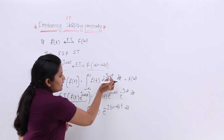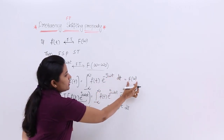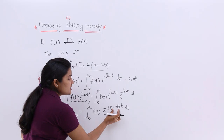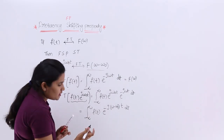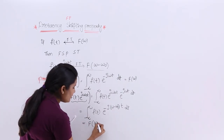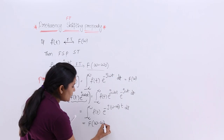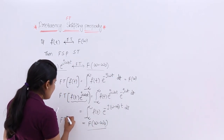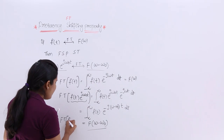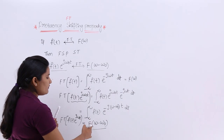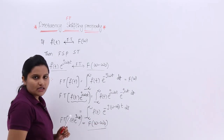You just compare this equation with the standard Fourier transform equation. If your frequency is ω, you write F(ω). If the frequency is ω - ω₀, you can write this as F(ω - ω₀) — hence proved. So the Fourier transform of f(t)·e^(jω₀t) gives you F(ω - ω₀).